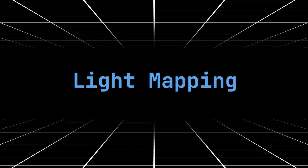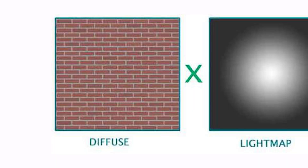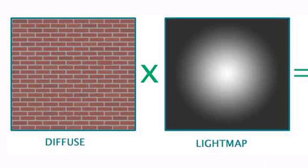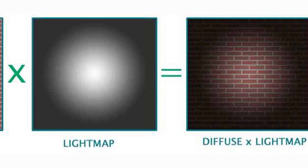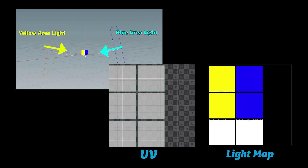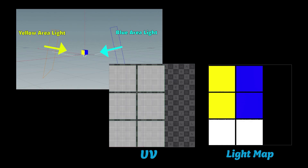Light mapping is a very fast way to do static global illumination, because we pre-compute the lighting and store it in a texture — also known as baking. Each object gets an index or UV that corresponds to a slot in the texture when applied in shading.